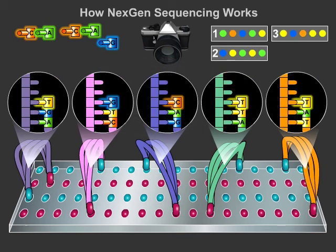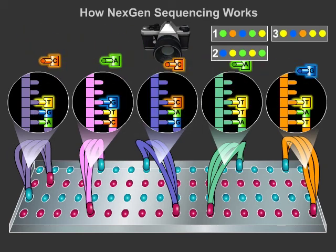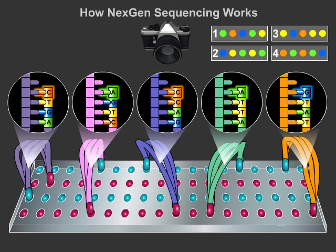Using this data, we can identify the different versions of 16S and ITS genes present, allowing us to understand the biodiversity of the frog's skin microbiome.